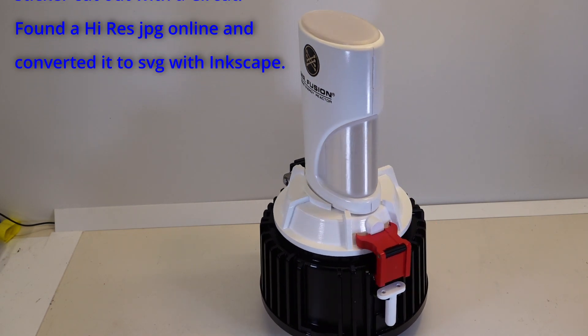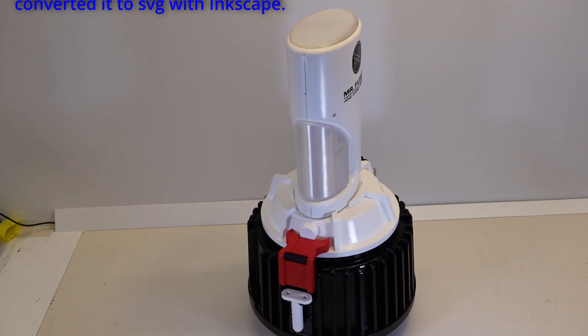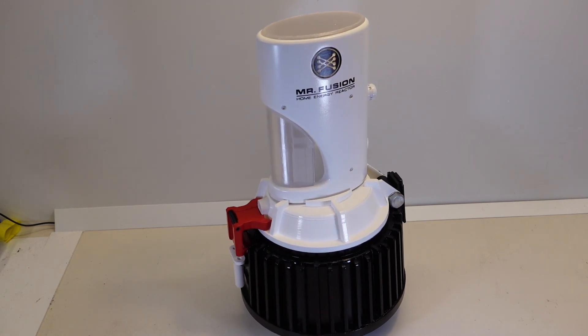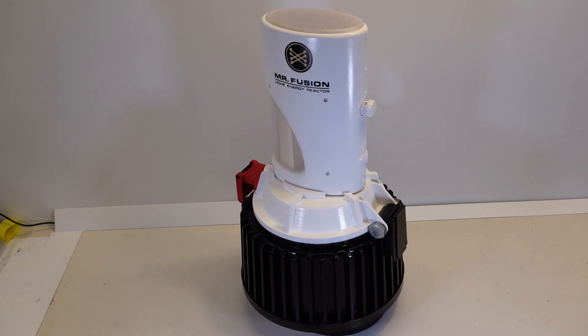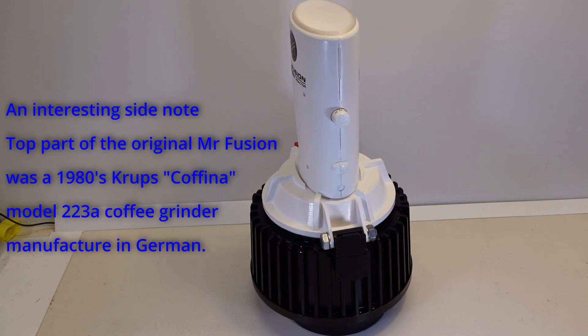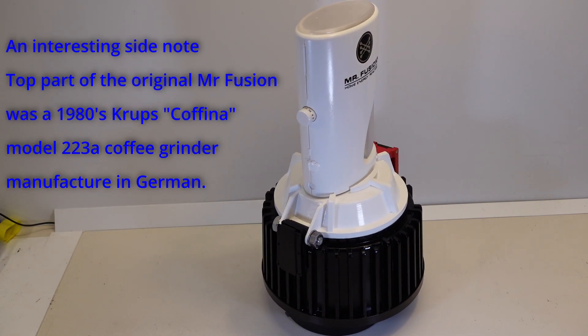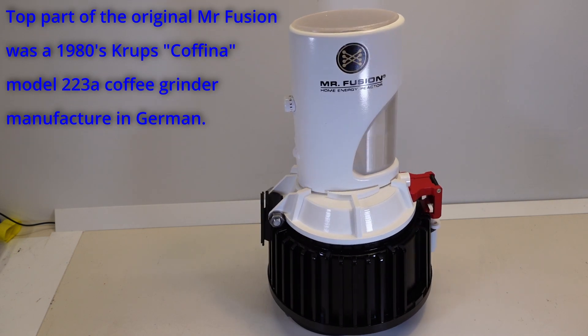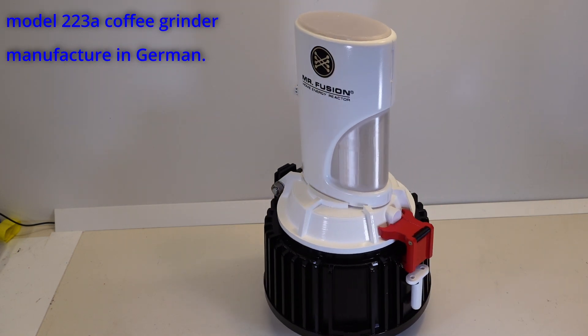During the research phase of the project, I found out that the original Mr. Fusion was actually a Crump's coffee grinder that they just put the Mr. Fusion badge on. I found that interesting.